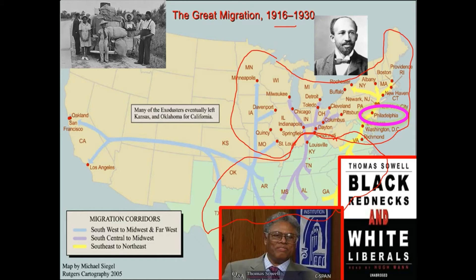The North was settled by English, Germans, and Puritans — people with different characteristics and values — making it almost a different country from the South. Before the Civil War, people said 'these United States,' meaning they were separate and different. After the Great Migration, Black Americans moved to northern cities and brought with them a culture characterized by higher rates of violent crime, lower education, and more children born out of wedlock. This is backed up by census data — those patterns were measurable in the South before the migration occurred.